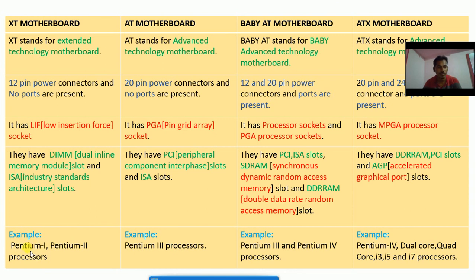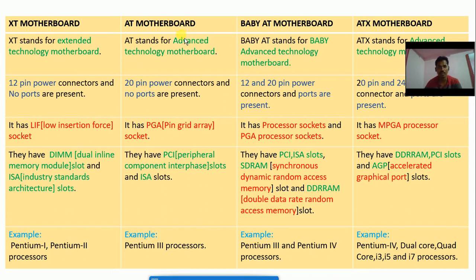Looking at processor examples for each motherboard type: the XT motherboard used Pentium 1 and Pentium 2 processors (old processors). The AT motherboard used Pentium 3 processors. The Baby AT motherboard used Pentium 3 and Pentium 4 processors. The ATX motherboard supports Pentium 4, Dual Core, Quad Core, i3, i5, and i7 processors - these are the current motherboards used in today's laptops and computers.